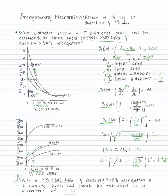Therefore, with a yield strength greater than 300 megapascals and ductility greater than 30% elongation, a 1 inch diameter brass rod should be extruded to a diameter of 0.927 inches.